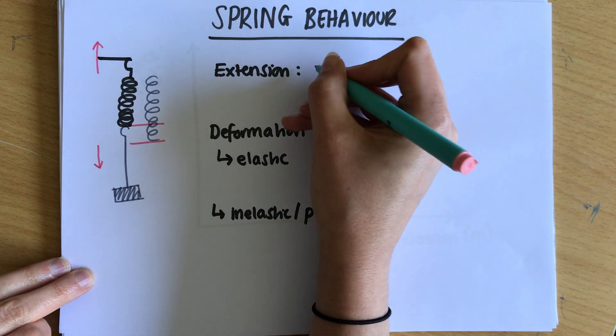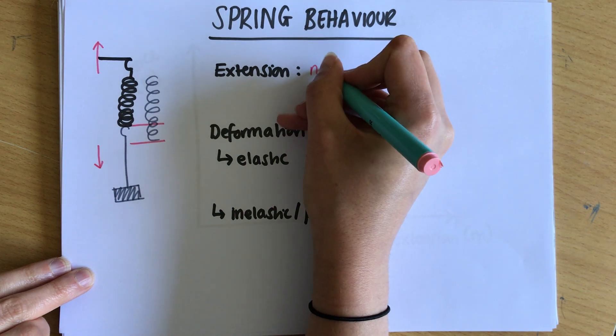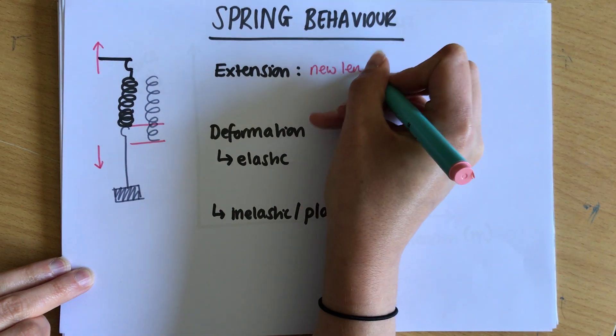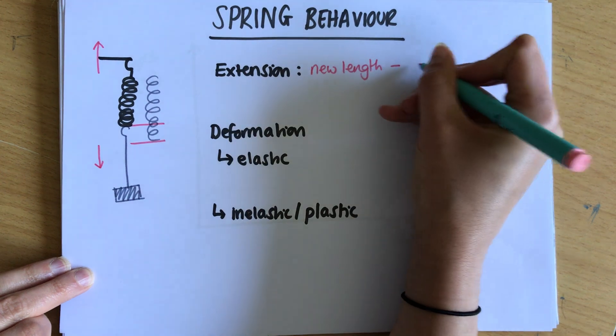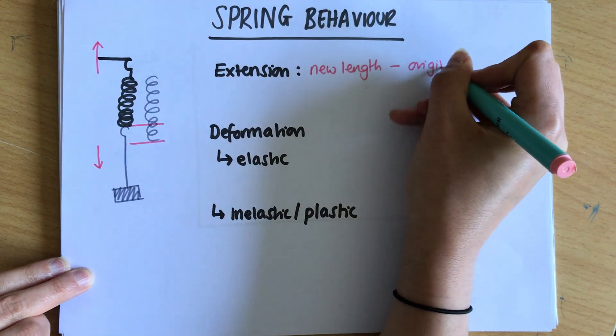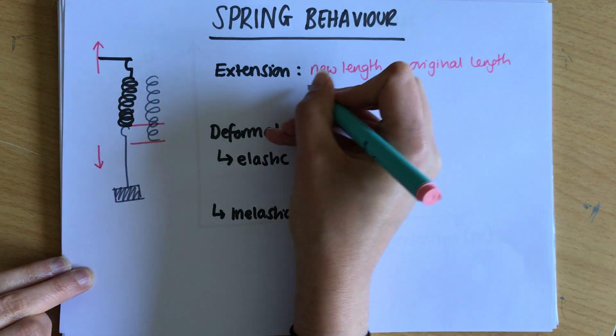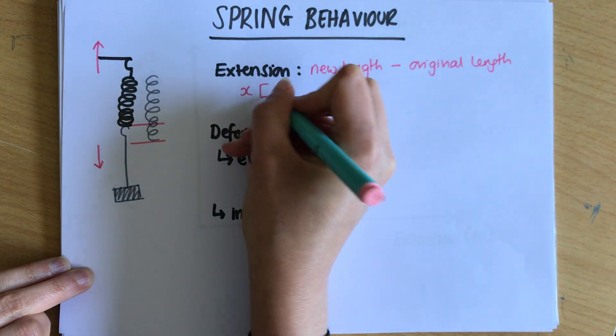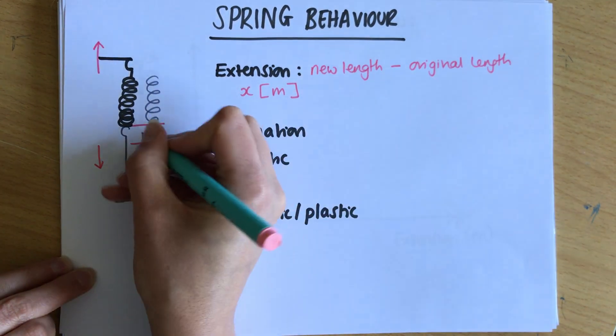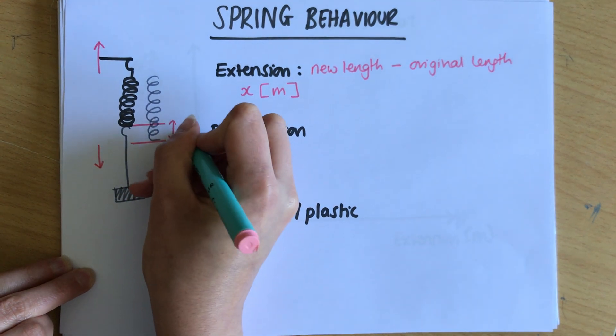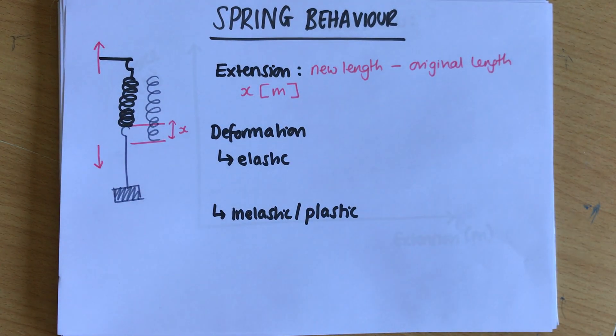Now extension is always equal to the new length minus the original length and I'm giving it the symbol X and it's measured in meters, although very often you would measure it in centimeters or millimeters because those extensions are often quite small.